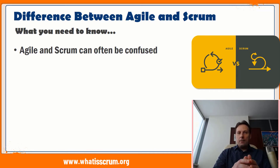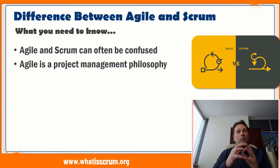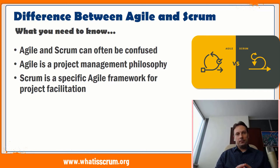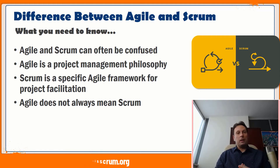The key difference between Agile and Scrum is that while Agile is a project management philosophy that utilizes a core set of values and principles, Scrum is a specific Agile framework that is used to facilitate a project. It is important to remember that although Scrum is an Agile approach, Agile does not always mean Scrum, because many different methodologies take an Agile approach to project management.